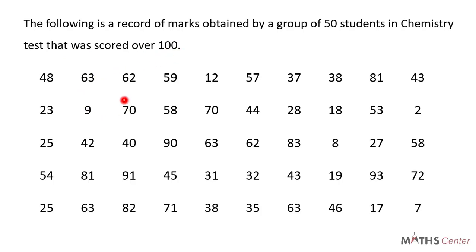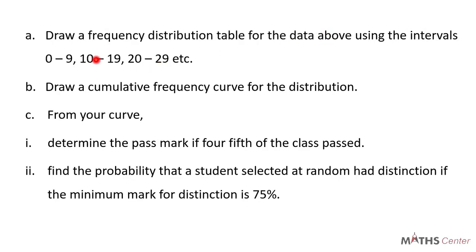We have the raw data from the test here. The test was taken by 50 students, so the total number of students in the class is 50. The first part of the question is to draw a frequency distribution table for the data using the intervals 0 to 9, 10 to 19, 20 to 29, etc. The second part is to draw a cumulative frequency curve for the distribution. The third part is to determine the pass mark if four fifths of the students passed, and find the probability that a student selected at random had distinction if the minimum mark for distinction is 75%.